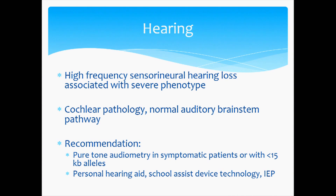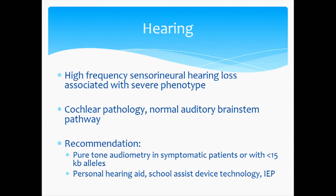Let's talk about some other systems that are involved — some non-muscle systems. One is hearing: there's high-frequency sensory neural hearing loss associated with severe FSHD. This originates in the cochlea. The auditory brainstem functions are normal, and we recommend pure tone audiometry in those who are symptomatic or those who have less than a 15-kilobase allele. Recommendations include getting a personal hearing aid for a child, a school assistive device, technology, and an individual education plan.